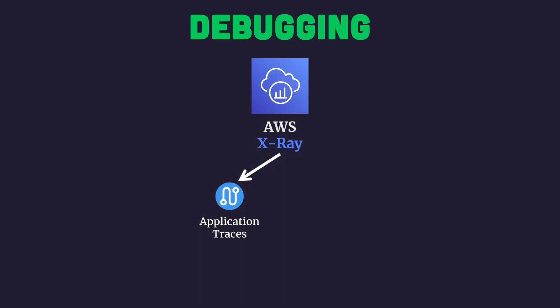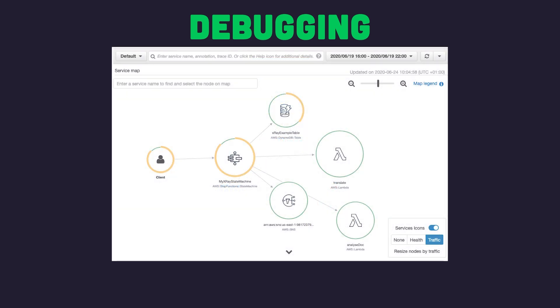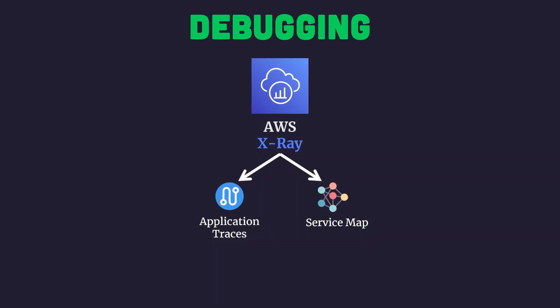Another important component of X-Ray is the service map. Service maps help answer the question: how does my application work? — by giving you a visual representation of all AWS services your application interacts with. The service map feature is fully interactive, allowing you to drill down into specific dependencies to understand their performance characteristics. All in all, X-Ray's traces and service map help you deep dive into the nuanced behavior of your application to understand bottlenecks and how to address them.